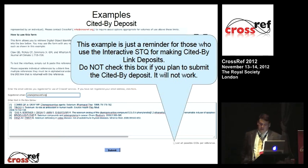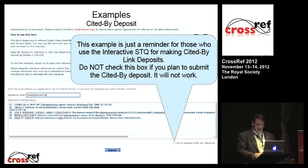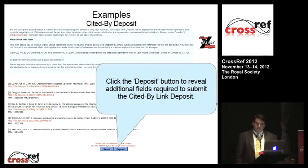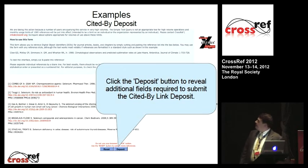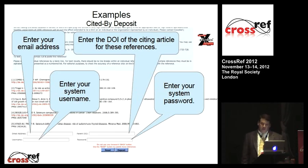This is a step-through of using the Cited-by Deposit. This is a sample deposit of a few citations. Note that you do not check the box for 'List All Possible DOIs Per Reference.' When you get your results, the Deposit button is available. You click Deposit, which exposes the fields for submitting — enter your email, the DOI of the citing article, your system username and password. This performs the deposit and you'll get a normal results email as you would with any deposit.